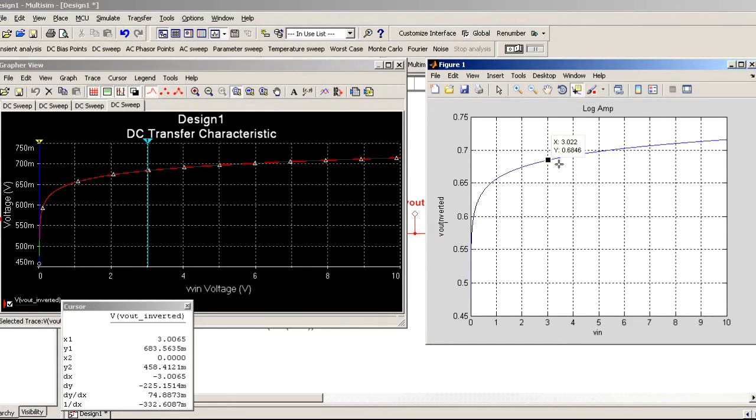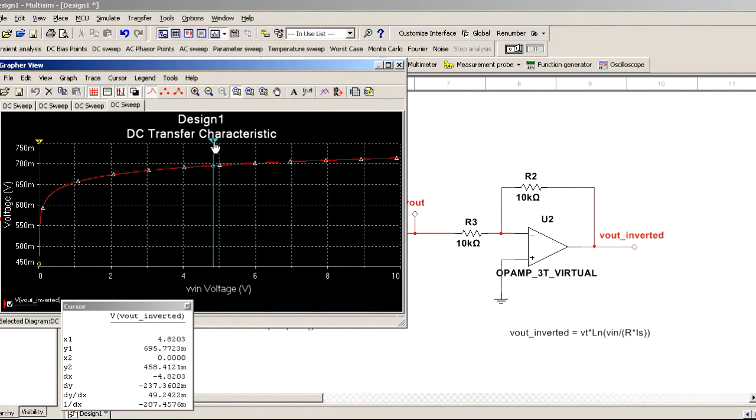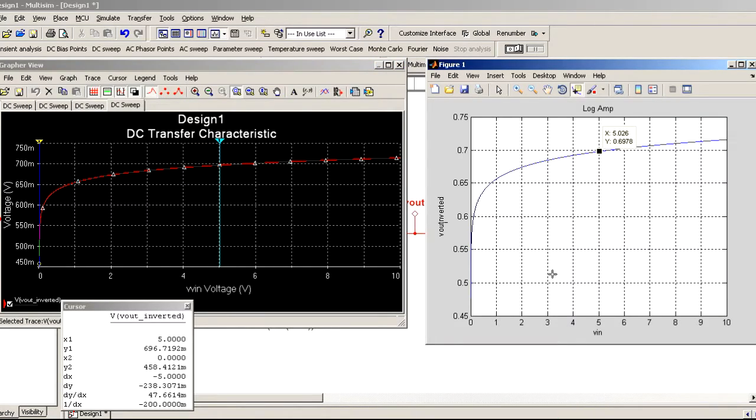So we'll go ahead and we'll slide on over to maybe say about 5 volts. And about 5.026 volts on our mathematical expression here. We have 697 millivolts, approximately, output. And about 5 volts here. Okay. We have 696 millivolts output, approximately, on our circuit simulator.